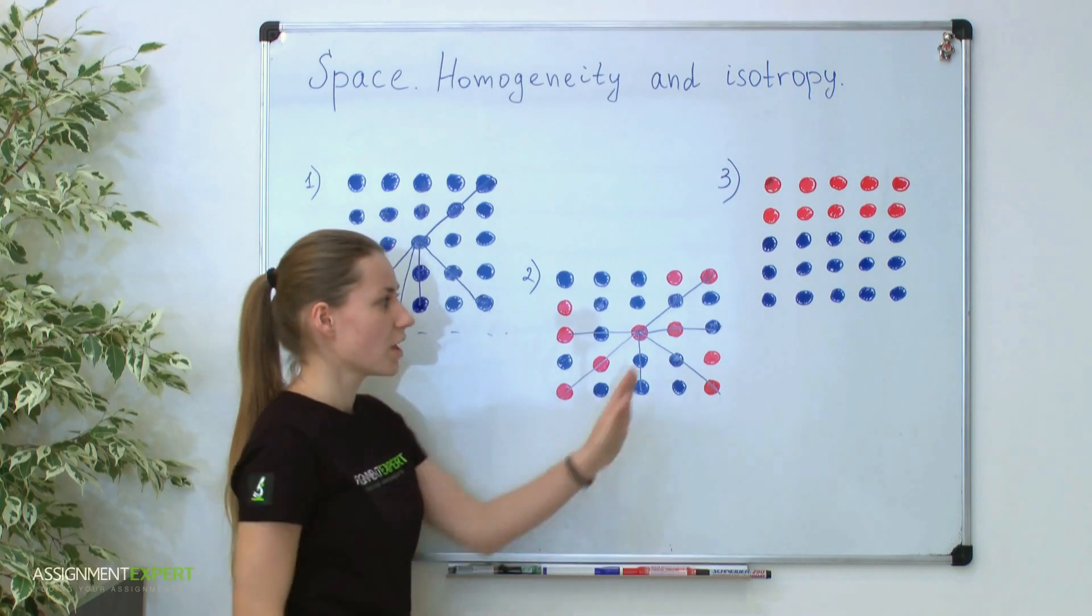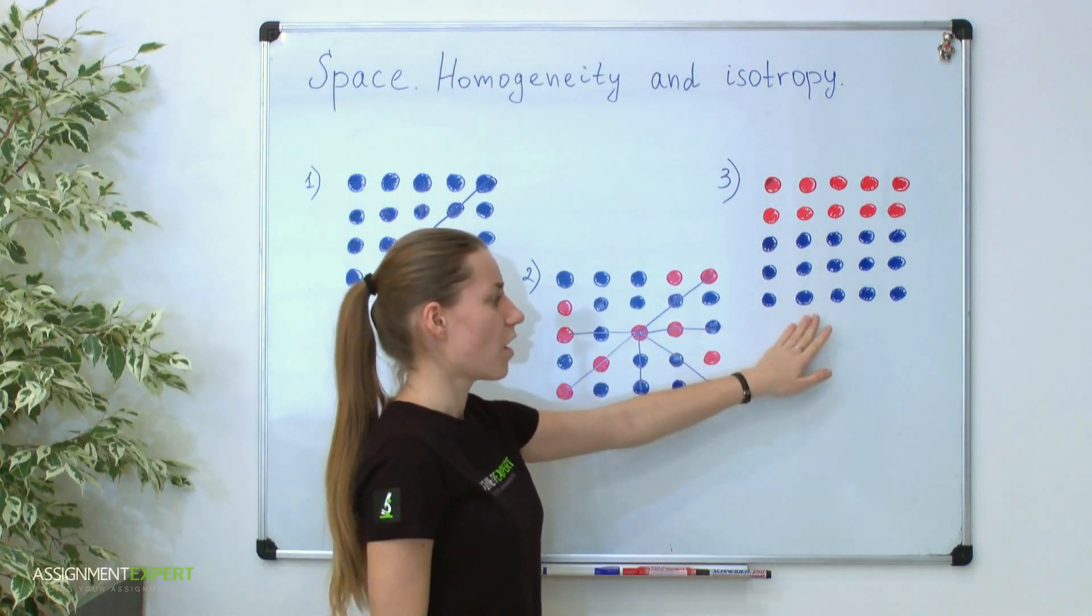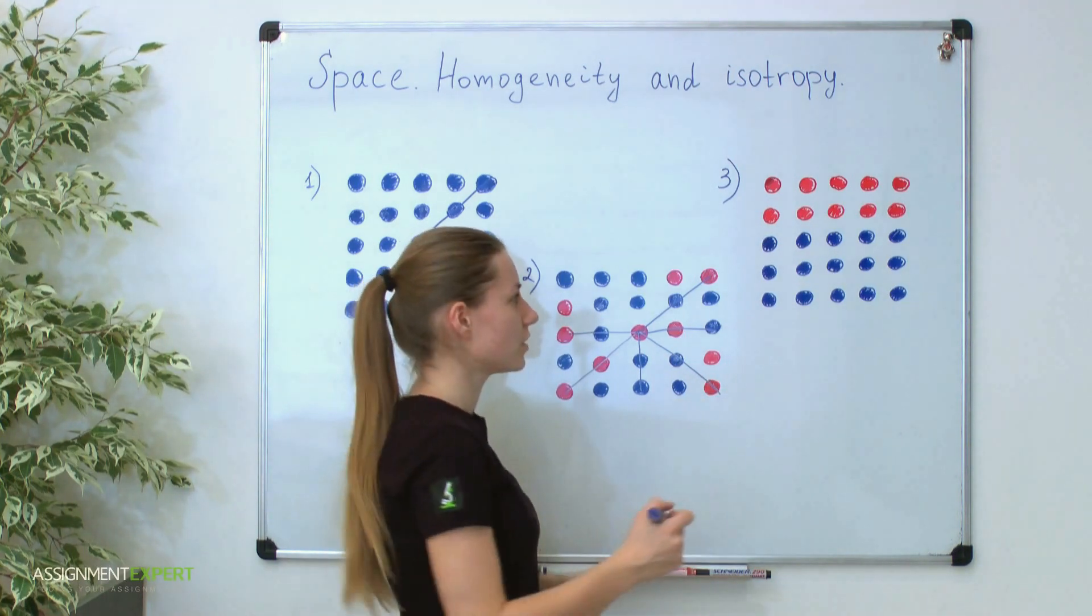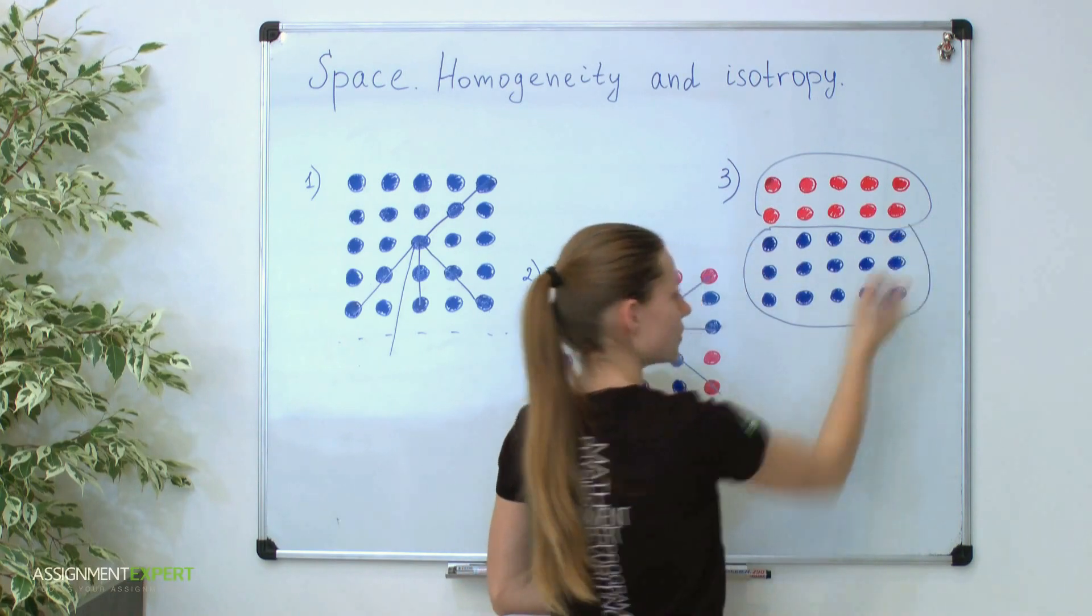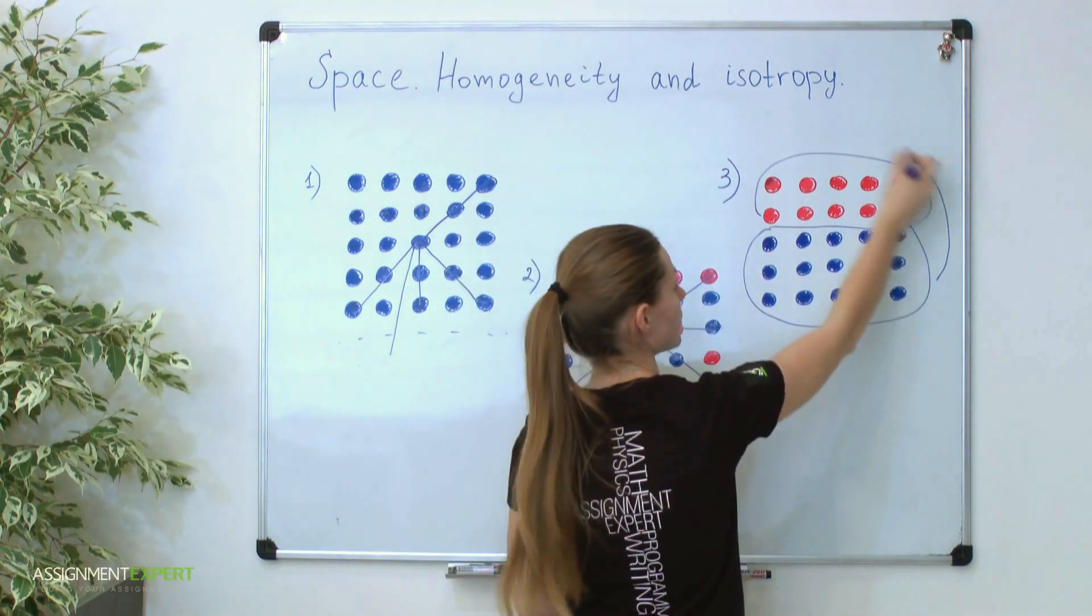Take these atoms and put into layers of our new crystal. You see that in our new crystal every layer is homogeneous and isotropic. But a crystal as a whole is not.